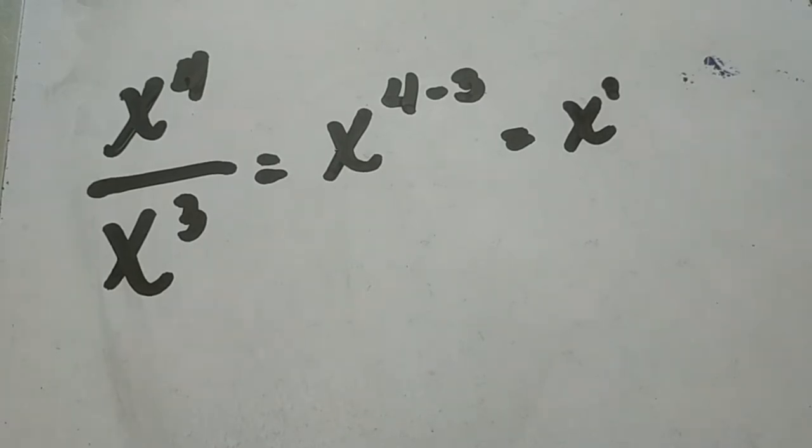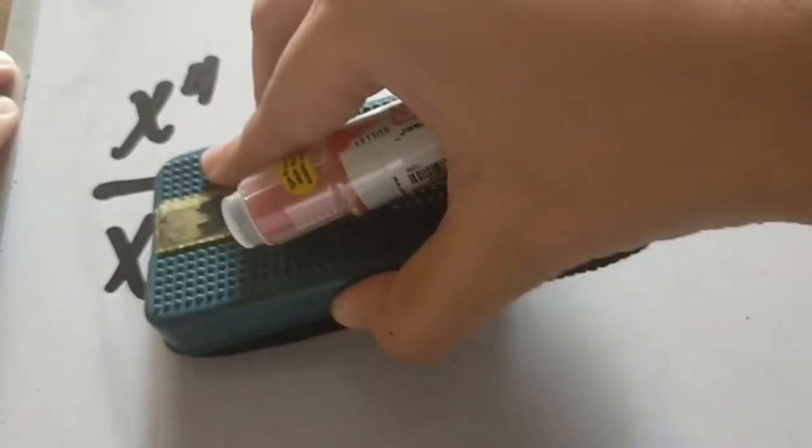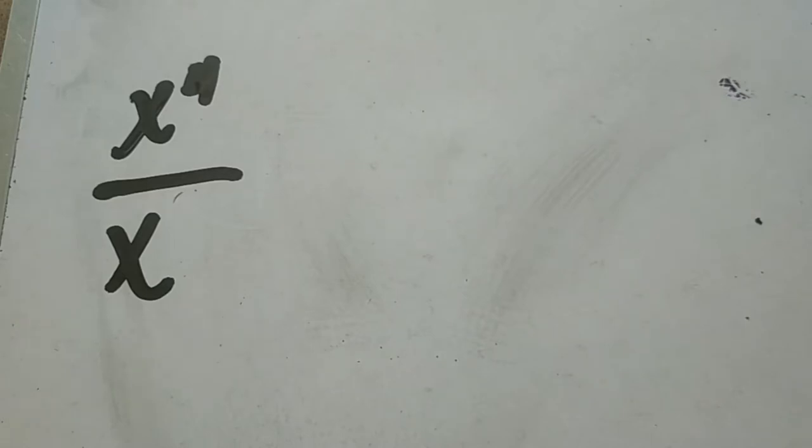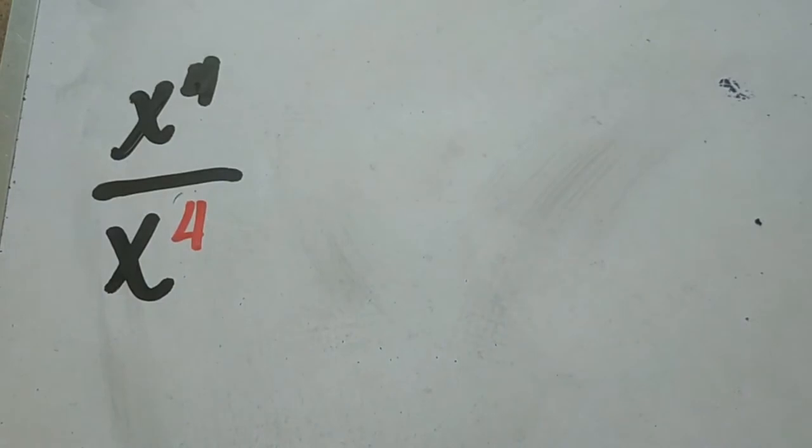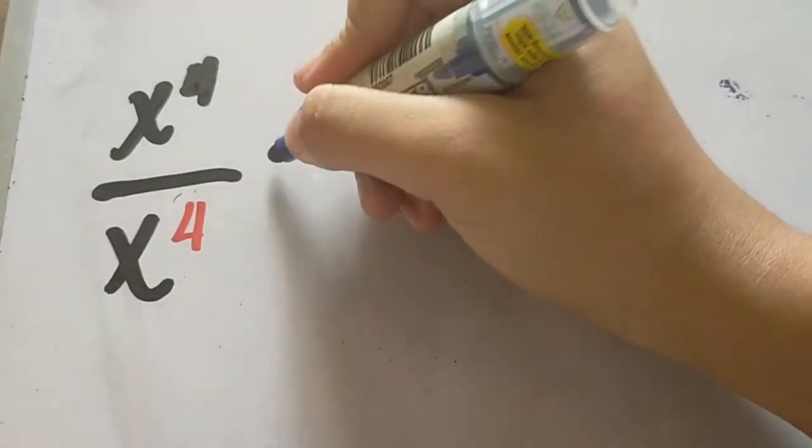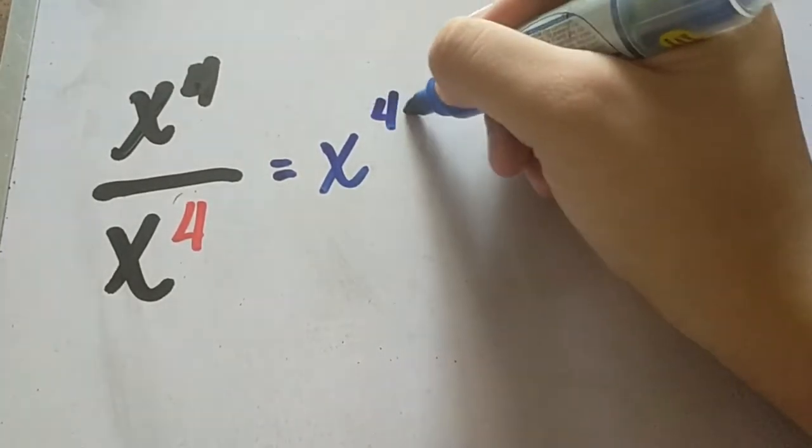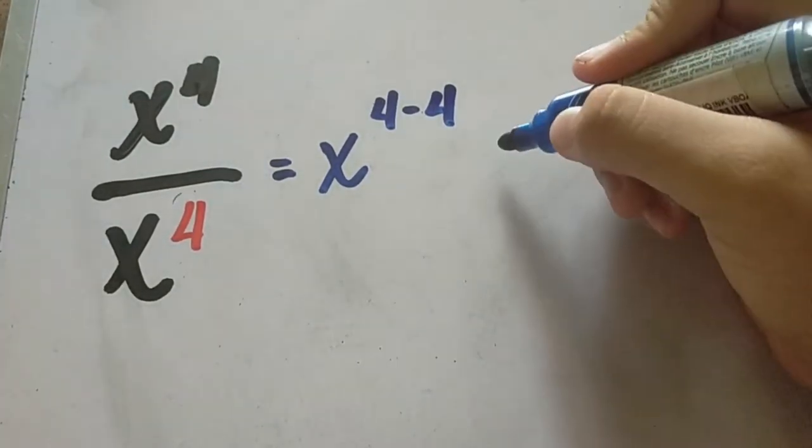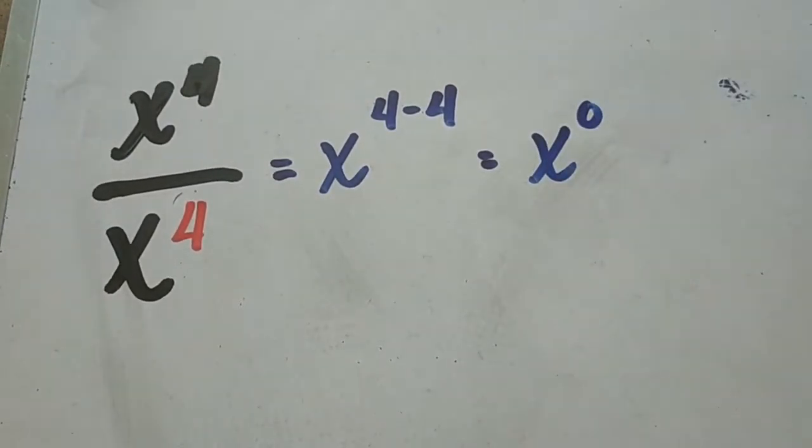Now what if we change this? What if we have the same exponents? So x raised to 4 divided by x raised to 4. Now if we're going to apply the quotient rule, we will have x raised to 4 minus 4, then we simplify and we will have x raised to 0.